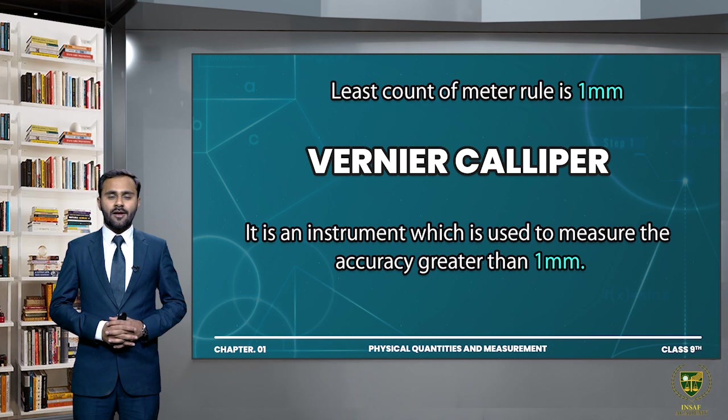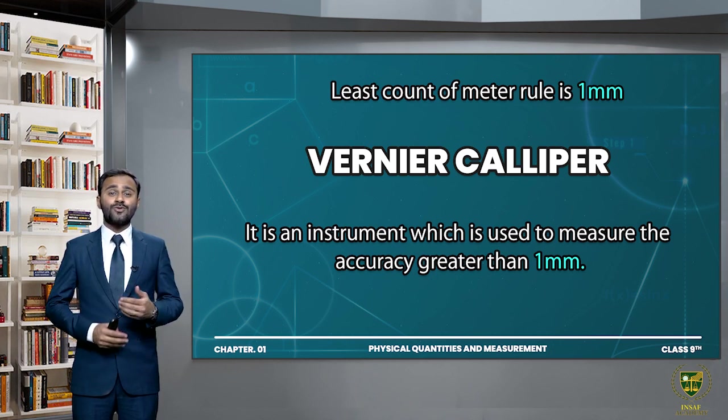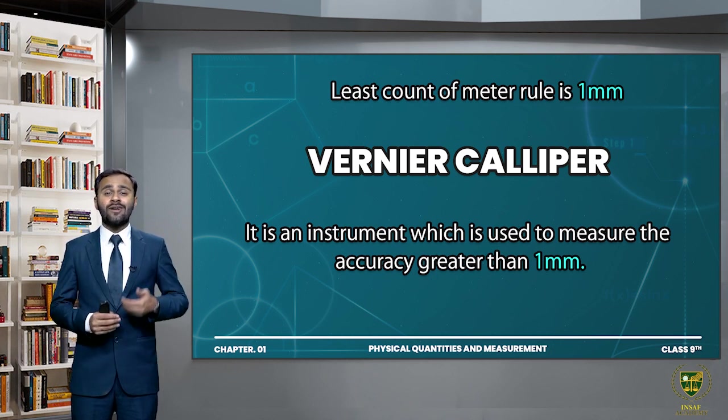What is Vernier Caliper? Vernier Caliper is an instrument that is used to measure with accuracy more than 1 mm.